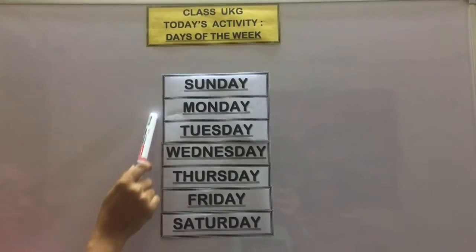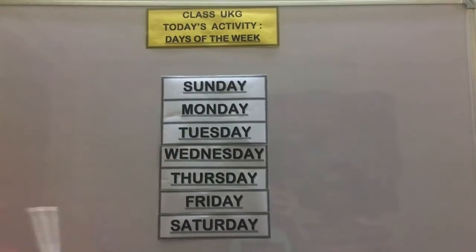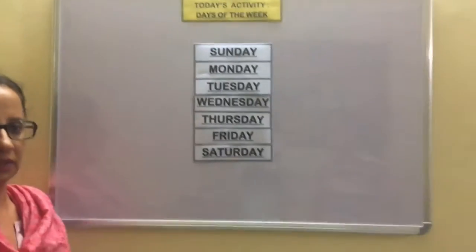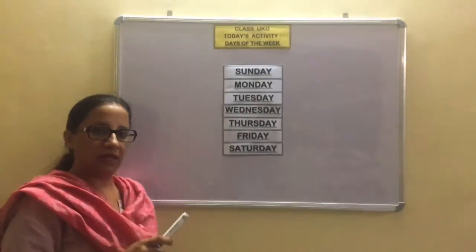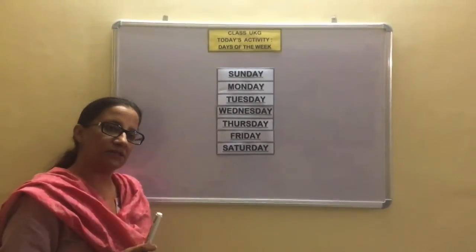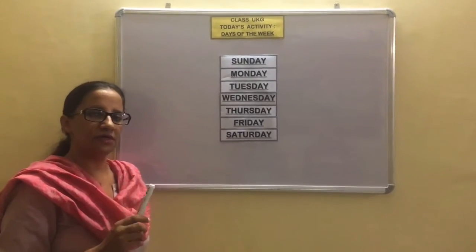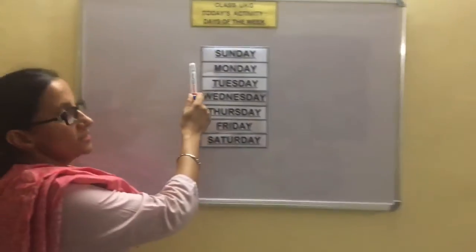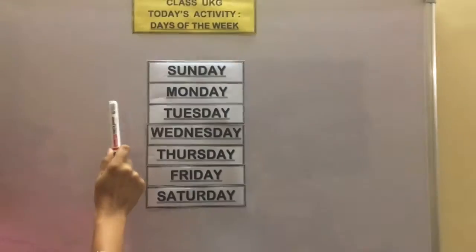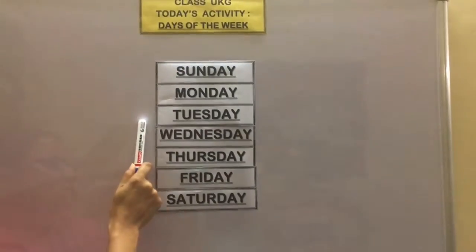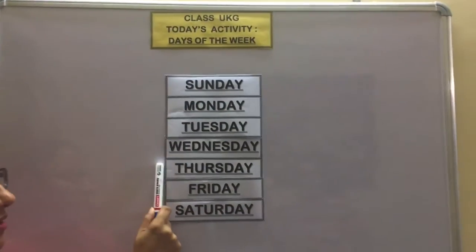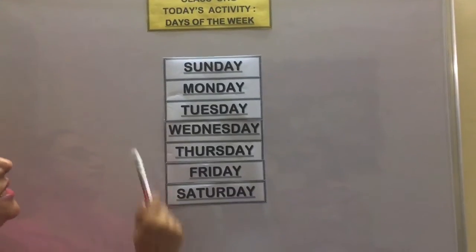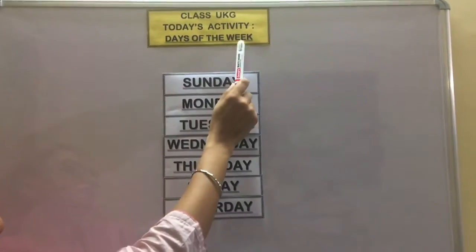So like this we have spelled seven days of the week. To remember them, now let's sing it in the form of a song. Sunday, Monday, Tuesday, Wednesday, Thursday, Friday, Saturday — the days of the week.